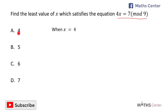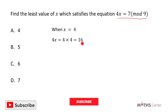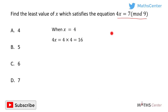Let's begin with the first option, which is x = 4. When x is equal to 4, 4x will be equal to 4 times 4, which is 16. So now we have to find the value of 16 in mod 9. Remember that the value of a number in a given modulus is the remainder after dividing the number by the modulus. The value of 16 in mod 9 is the remainder when 16 is divided by 9. When you divide 16 by 9, you get 1 remainder 7, so the value of 16 in mod 9 is 7.